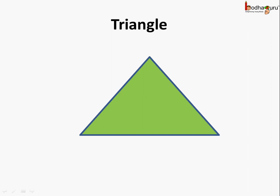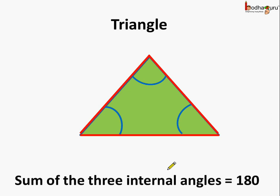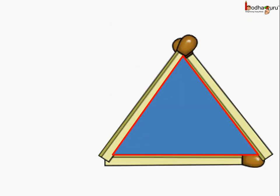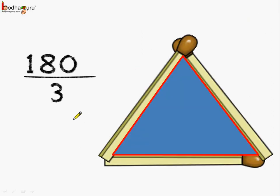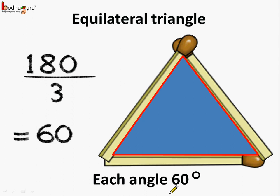So it means equal angles and equal sides for an equilateral triangle. Now let us try to prove it mathematically. In a triangle these are the three sides and three angles. The triangle may be of any type but the sum of three internal angles is always equal to 180 degrees. So if all three angles are equal, each angle equals 180 divided by 3, which is 60 degrees. So each angle in an equilateral triangle is equal to 60 degrees. Understood?